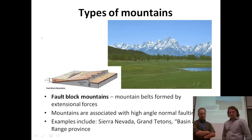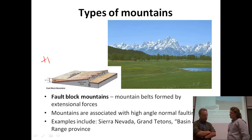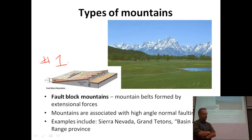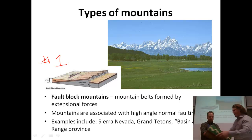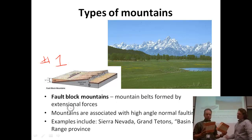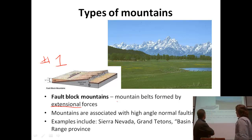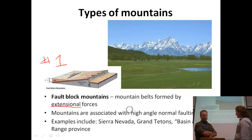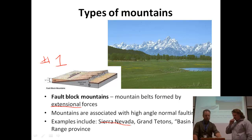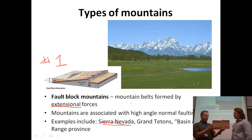Types of mountains. We've got fault block mountains — kind of like the blocks from the last series. Mr. Watt and Mr. Baldwin talked a lot about faults: normal faults, reverse faults, and thrust faults. Mountain belts formed by extensional forces — associated with high angle normal faulting. Normal faulting — which way are those blocks going to move? It's an extensional force, so we're pulling them apart.